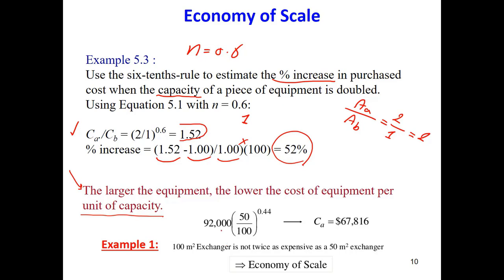So here, for example, if I have an equipment, let's say the heat exchanger, previously it had an area of 100. Now I want to build the heat exchanger that has an area of 50. The previous price was 92. If I make the area of the heat exchanger half of the initial area, the price doesn't get necessarily half. The price decreases, but it doesn't get half. Or vice versa. If I increase the area, the price doesn't get double. It increases, but it doesn't get double. That is called the economy of scale. A 100 square meter exchanger is not necessarily twice as expensive as the 50 square meter, based on what you see in this equation.